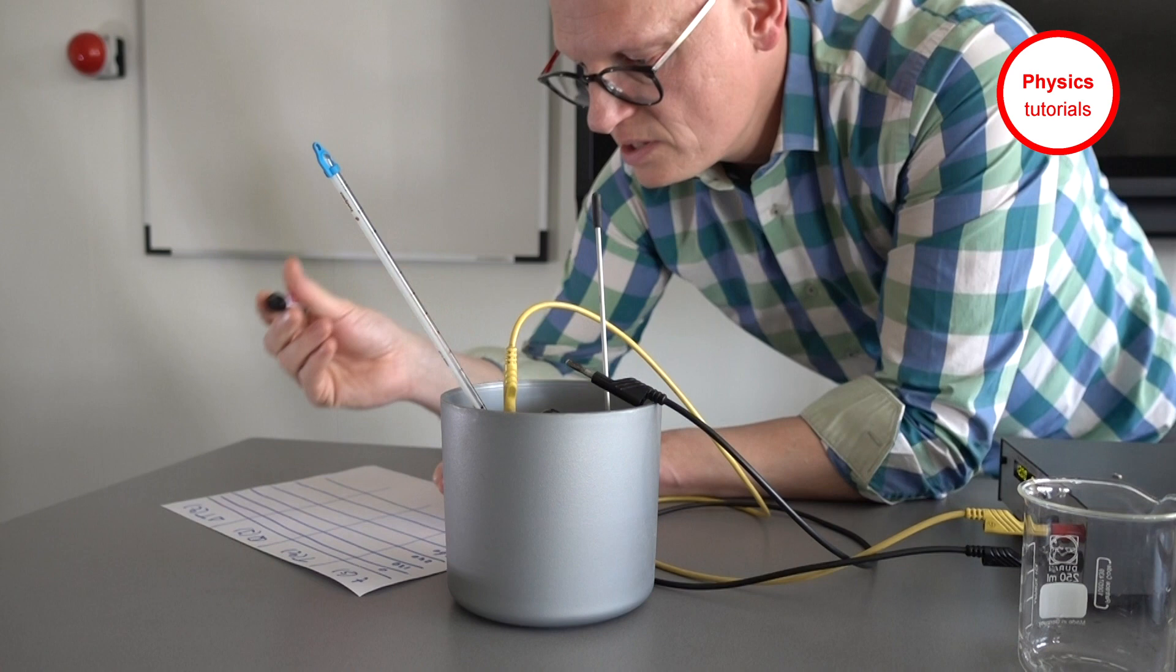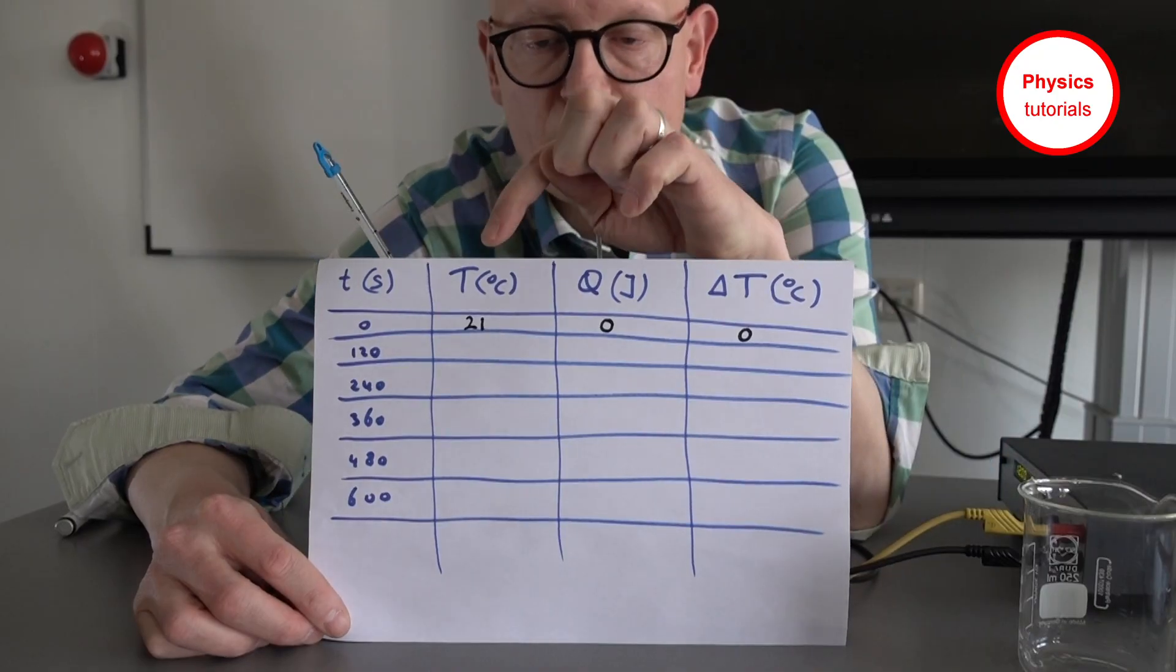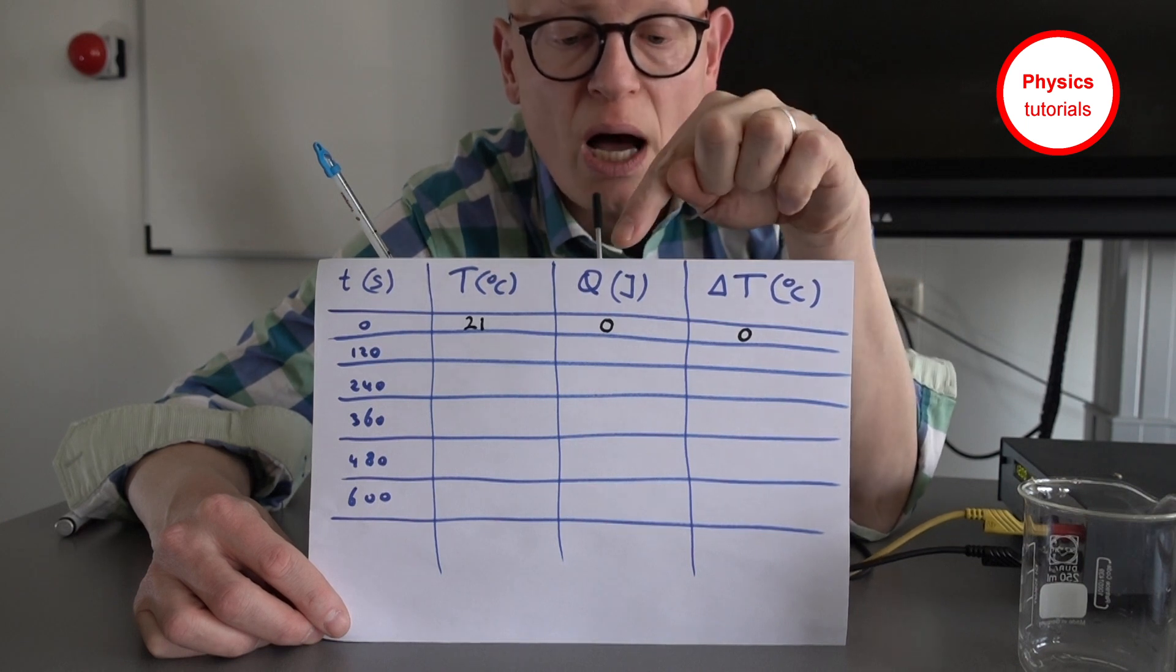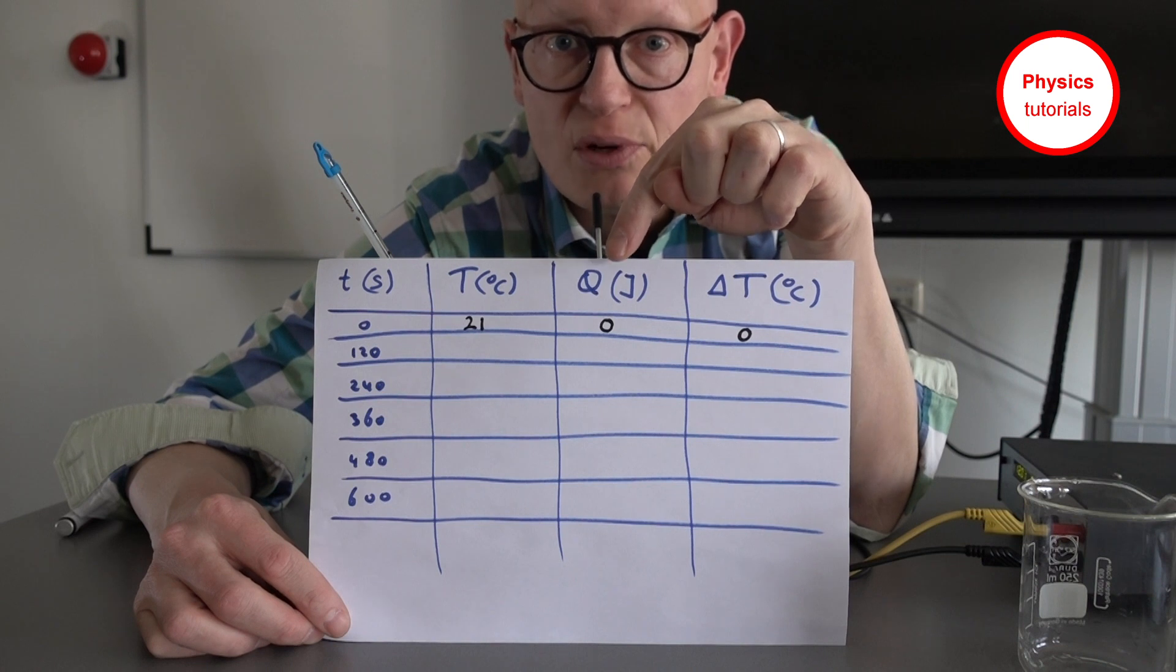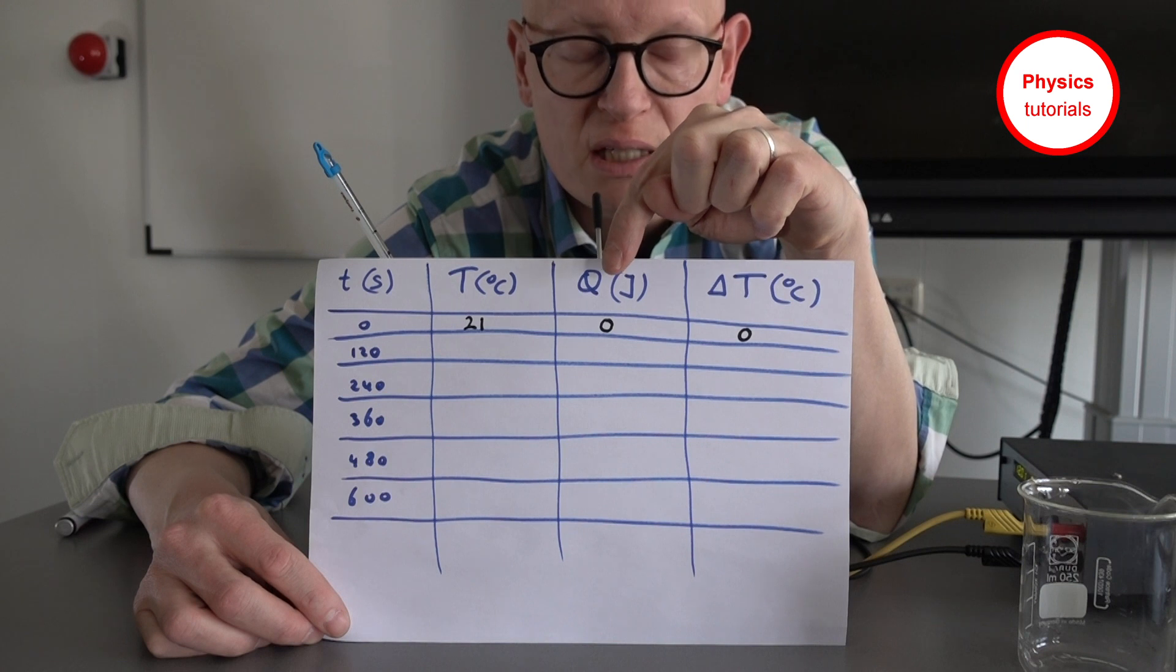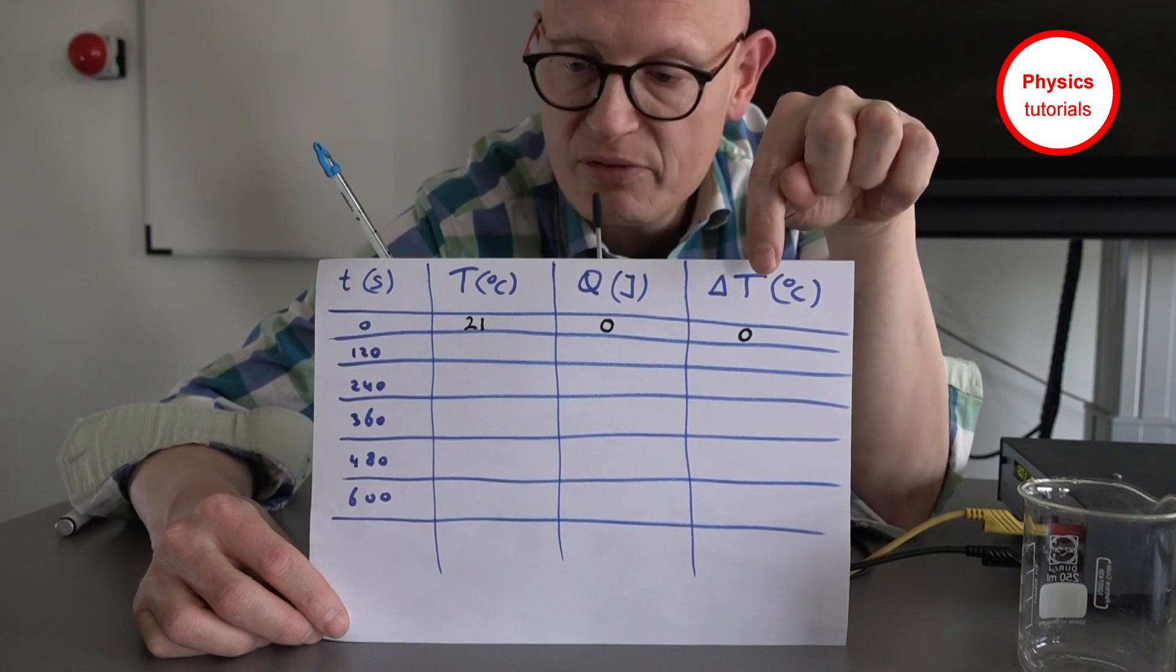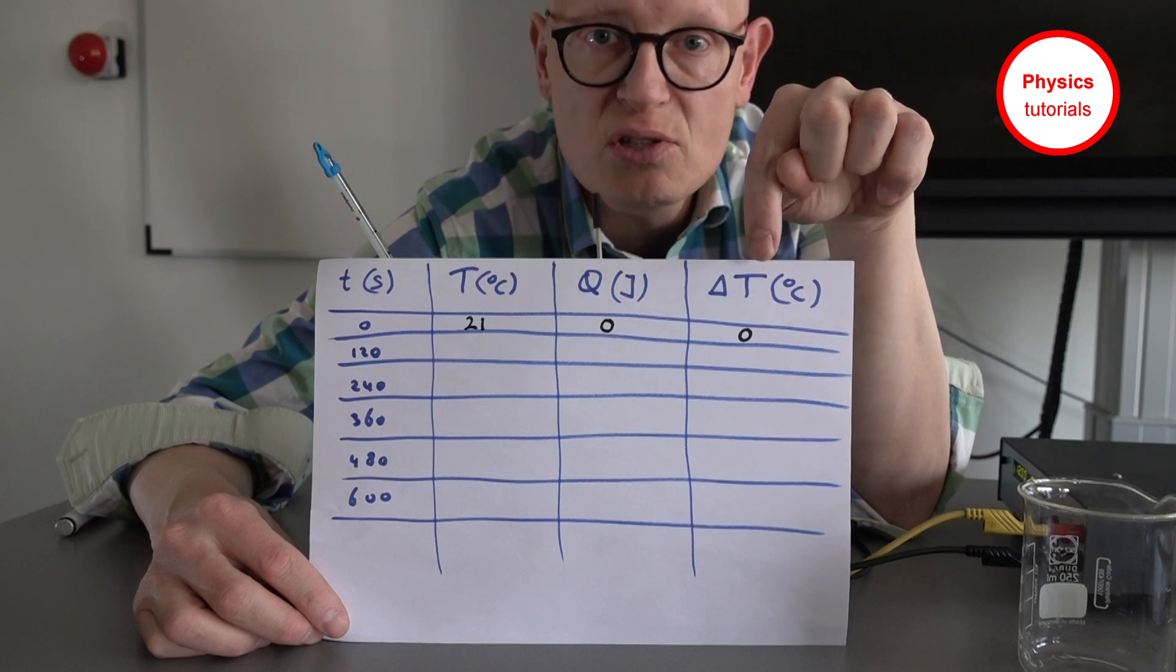21 degrees Celsius. I wrote down the starting temperature here, 21 degrees Celsius. Also I wrote down that there hasn't been any heat transfer yet, so I wrote down 0 at the amount of heat in joules. There hasn't been a temperature rise yet, so in the first row I write down 0 degrees Celsius for delta T.